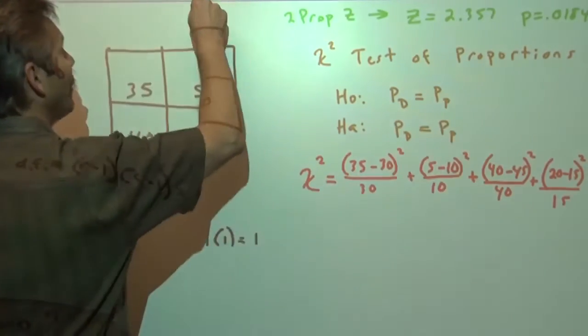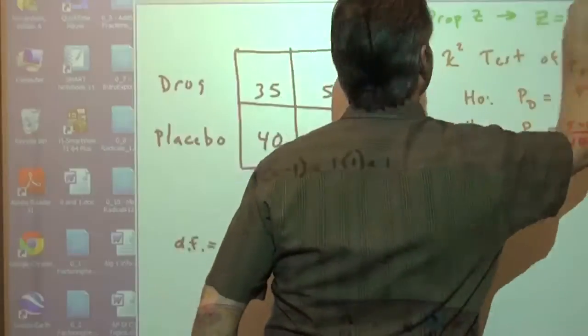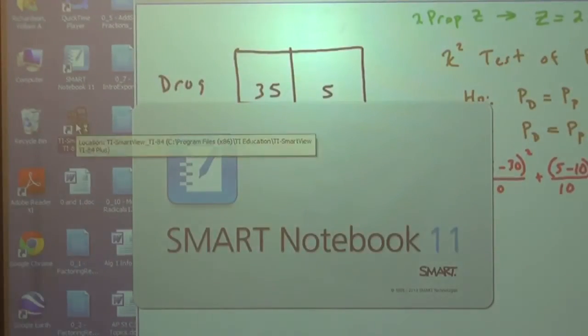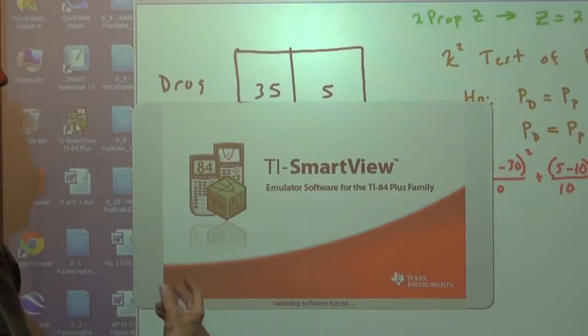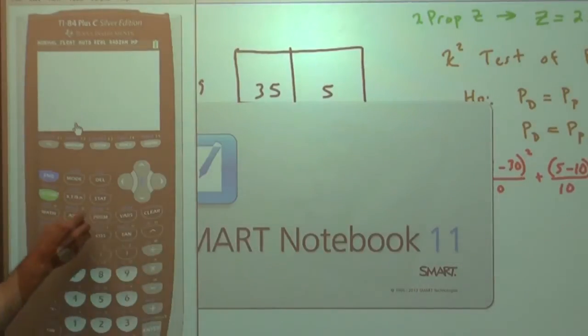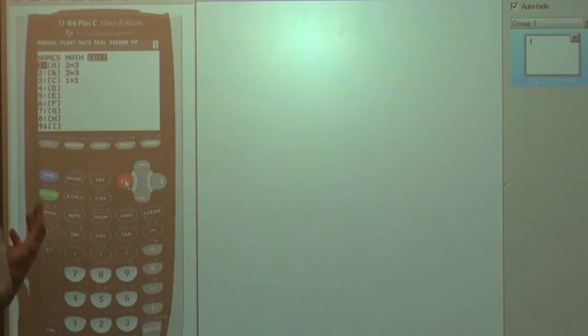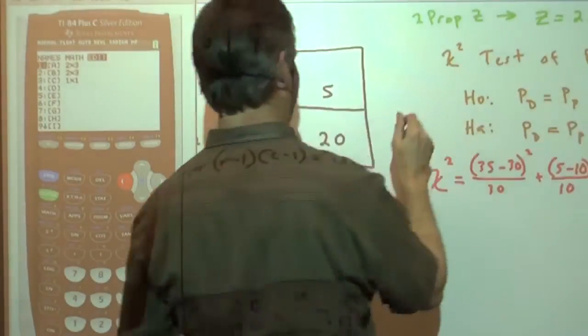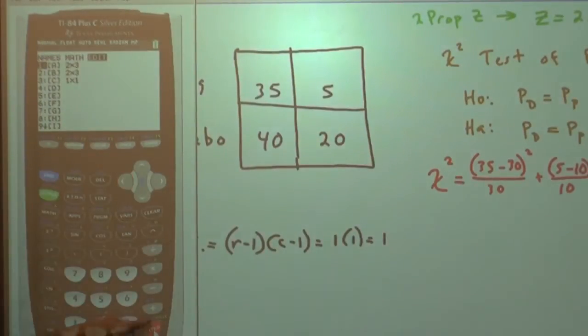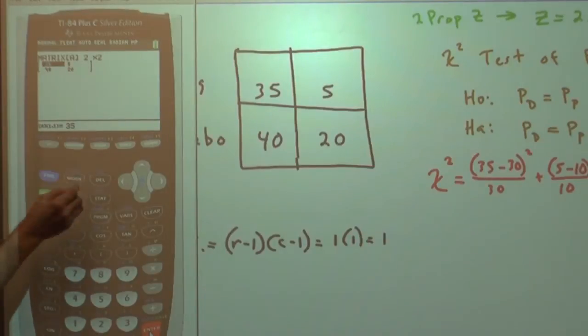Now, we can show all this work, but we can use the calculator to help us to do this problem. So what we're going to do is go to the matrix. We go to the matrix, and we're going to go into the edit version of the matrix, and we're going to create a matrix that matches the dimensions of this. We need a two-by-two matrix. So we're going in here, and we're going to create a matrix that is two-by-two, and we're going to put in the observed counts in the matrix. So we're going to put 35, we're going to put 5, we're going to put 40, and we're going to put 20 into the cells of our matrix. And then the nice thing about these calculators is we'll go run the test with that matrix as our observed matrix.